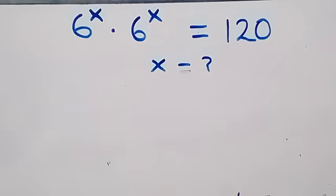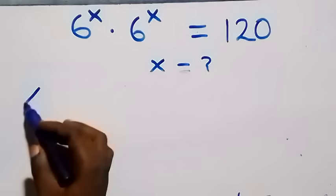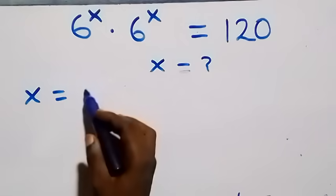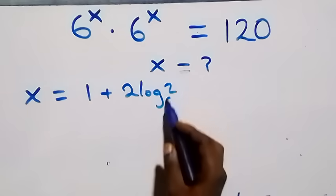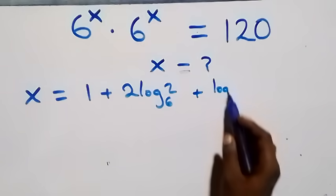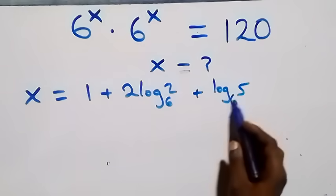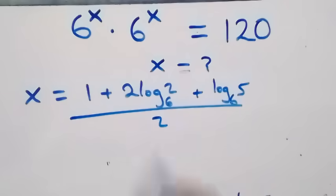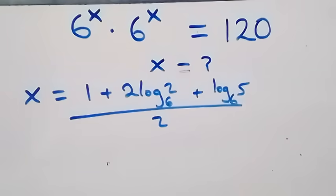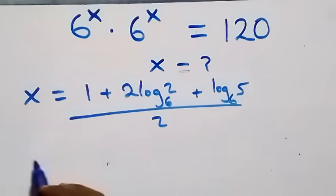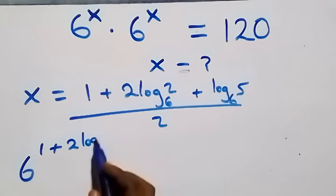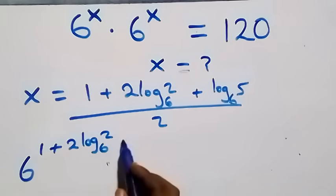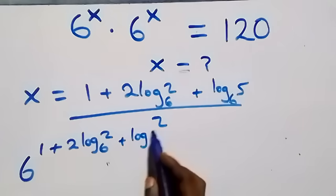Now let's check. We have the value of x equals 1 plus 2 log₆2 plus log₆5, all over 2. Substituting back, we need to verify this satisfies the original equation.